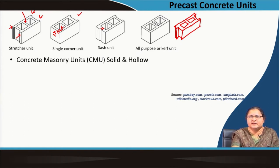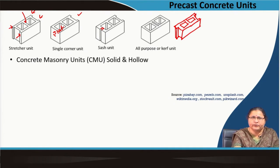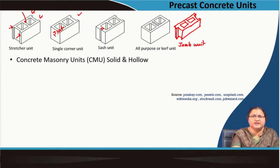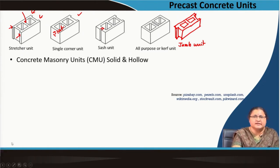Whatever the requirement, you can select your piece from the lot and use it, but what is the difficulty? Can you cut it? It is not possible. So you have to move to a modular plan — everything should be given in advance where this kind of window will come and bear the sash unit, or where a door will come and you have a jam unit, or where you are finishing you will have a flat end.